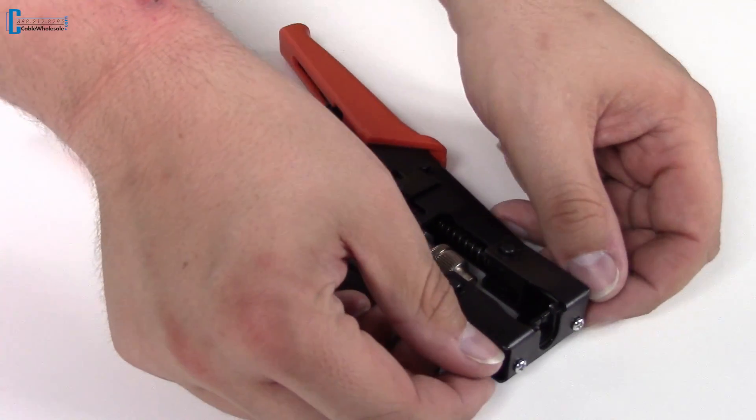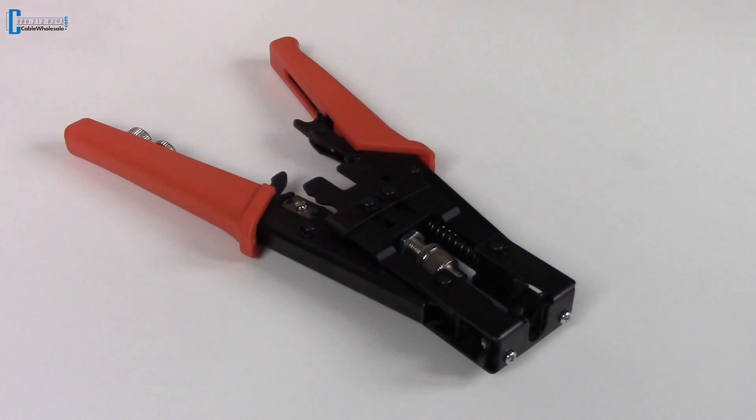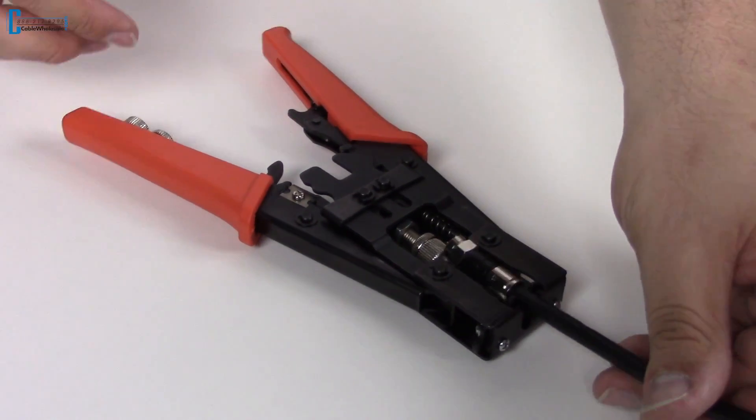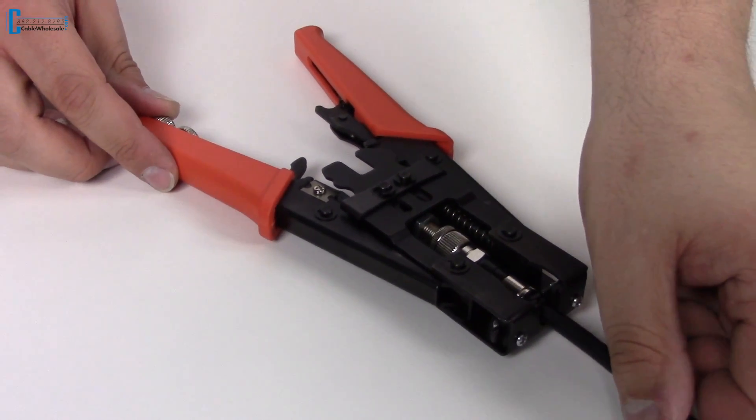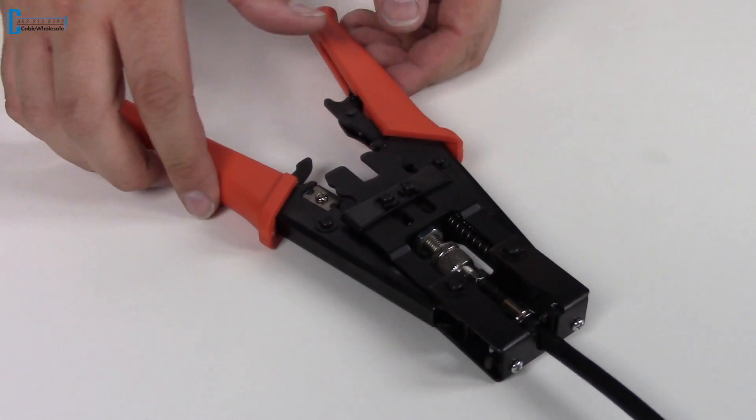At the front of the tool, there's jaws that simply fold out and you can rest the cable inside the die. The jaw is locked to close it. Squeeze.